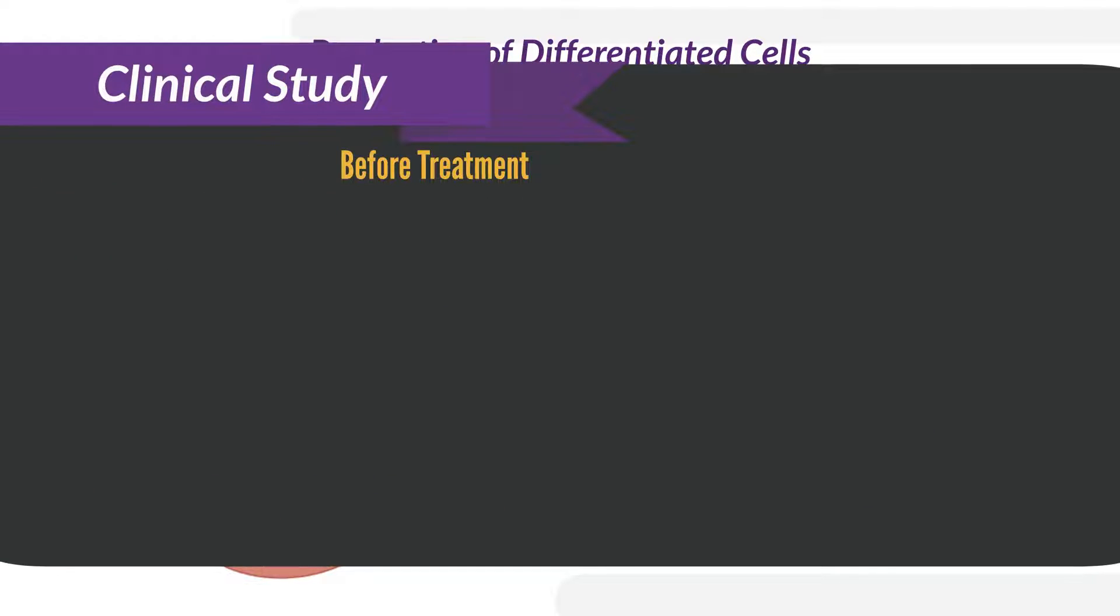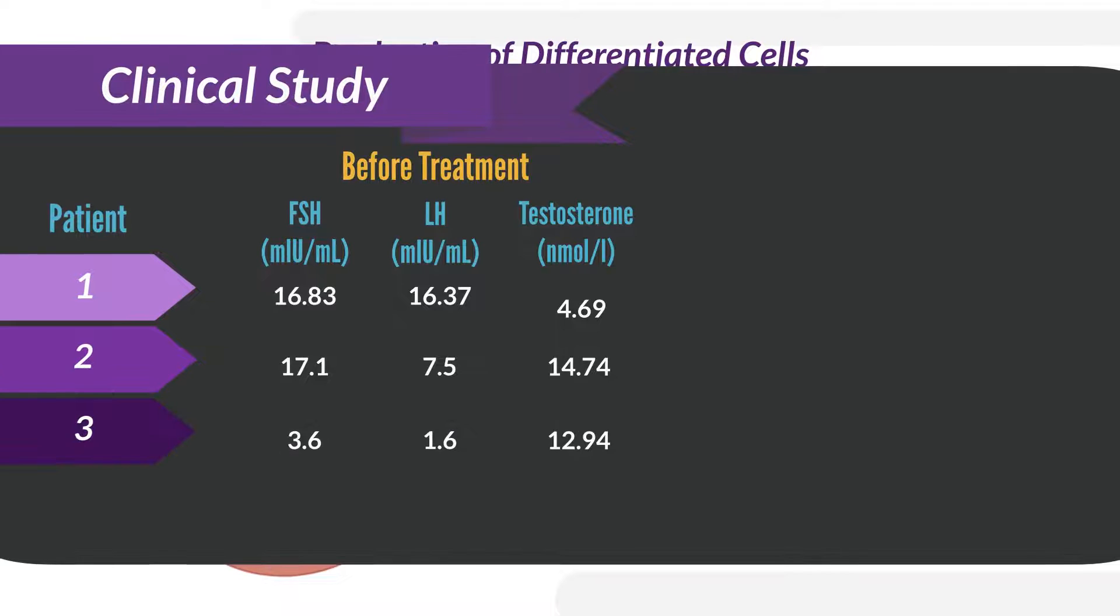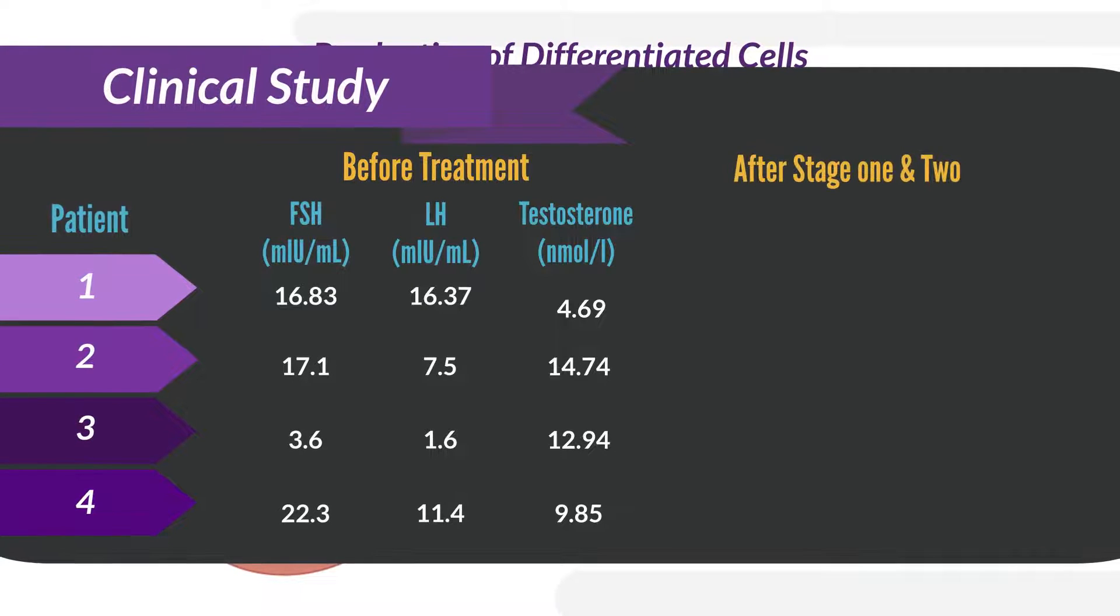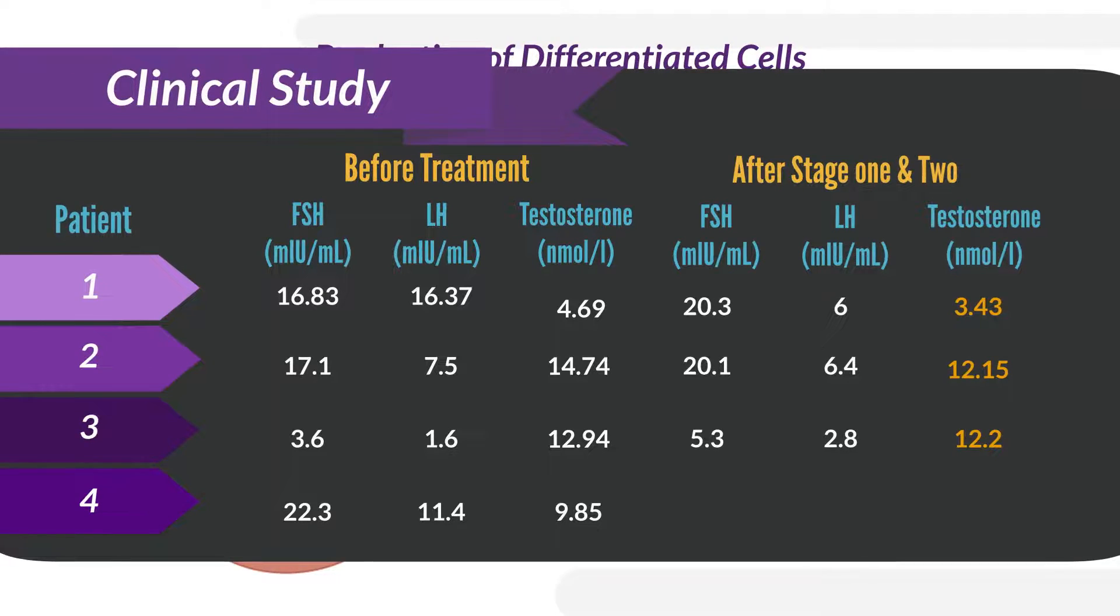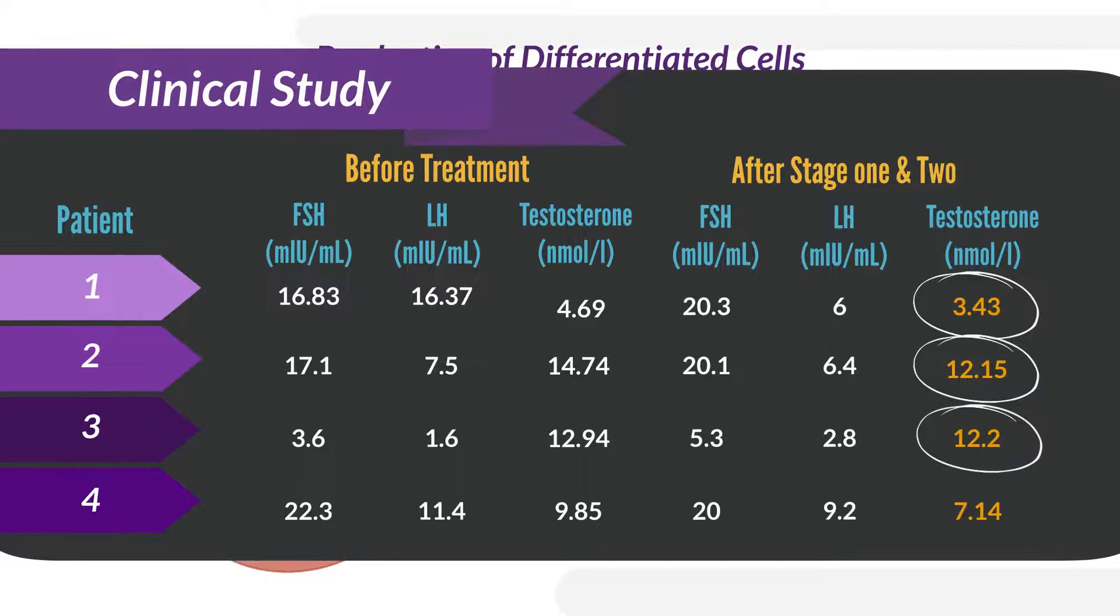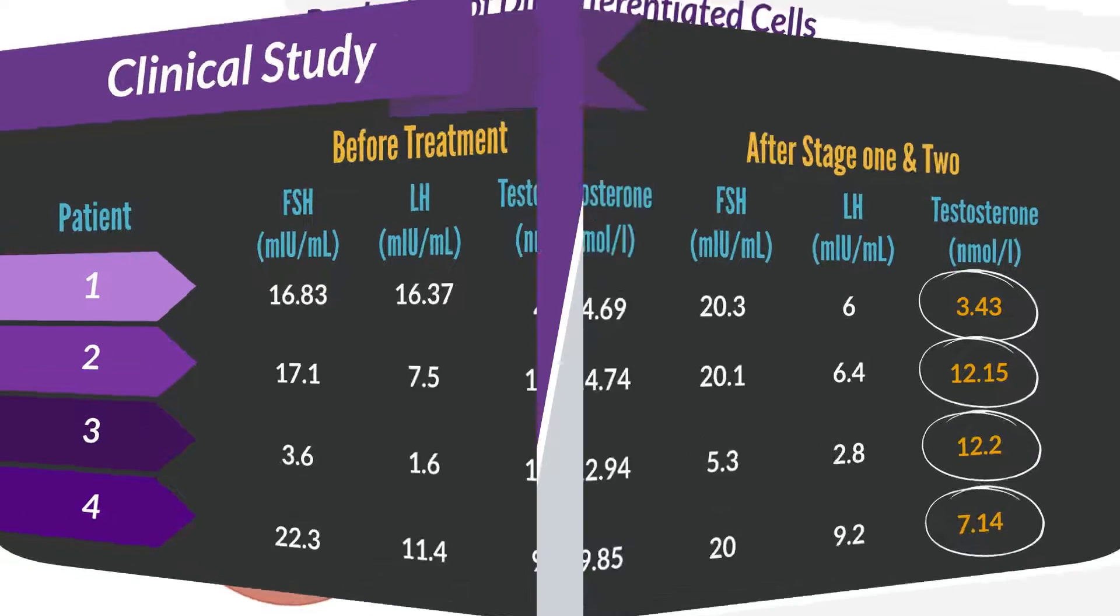Our clinical study includes 89 patients with primary testicular failure. The hormones FSH, LH, and testosterone were evaluated before treatment and after three months to examine the effect of stages 1 and 2. This table is an example showing that stages 1 and 2 can reduce testosterone levels.